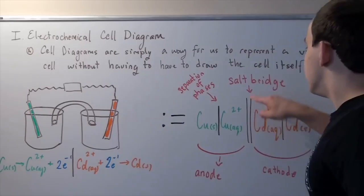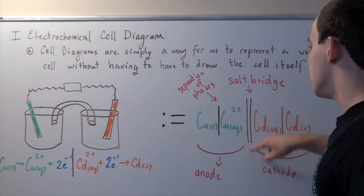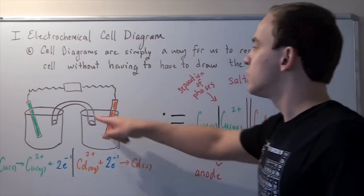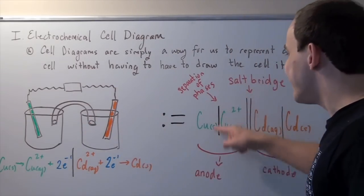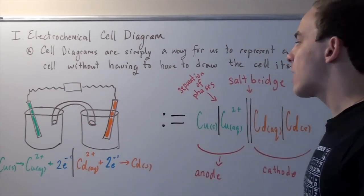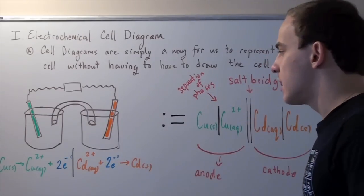The double bar in the middle, the vertical double bar, represents our salt bridge. The single vertical lines represent our separation of phases.